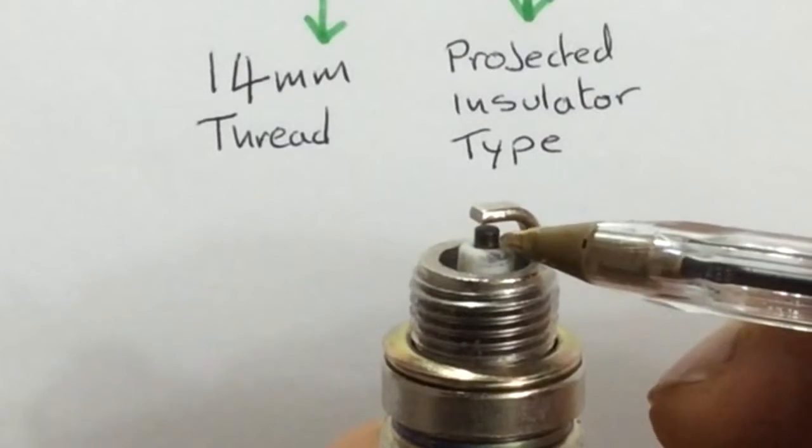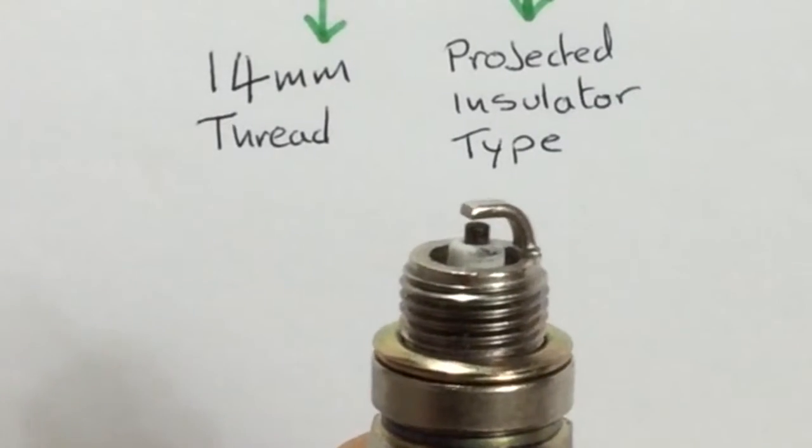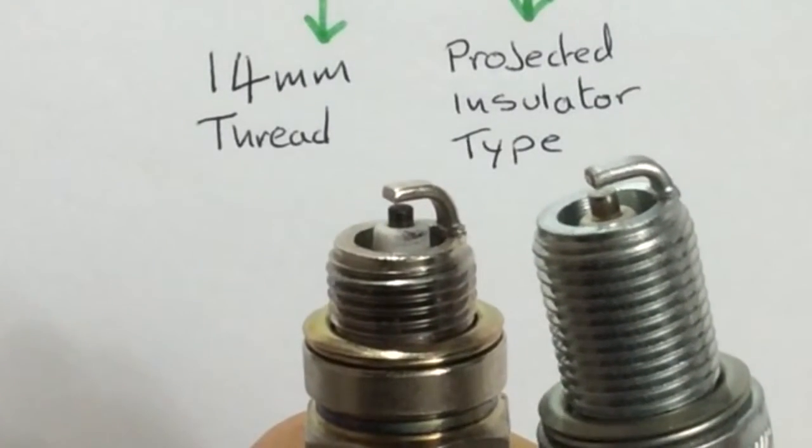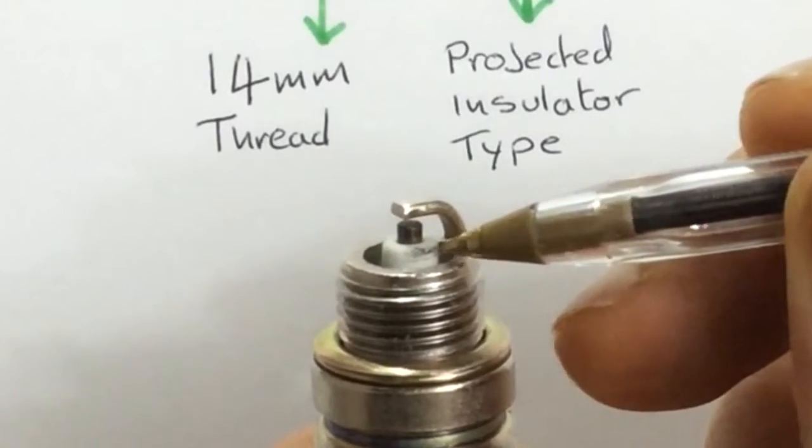That insulator there is insulating the electrode that creates the spark. When compared to this plug, you can see that the insulator there is down lower than the outer ground area. So it's what we call a projected insulator. It's a special insulator.